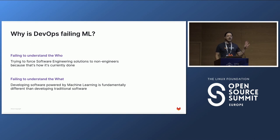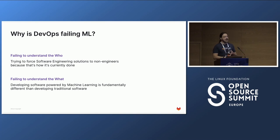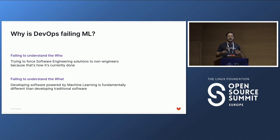There were two themes across these examples of where DevOps or platform teams are failing the machine learning world. First, failing to understand the who — the people involved with developing machine learning are different from software engineers, with different backgrounds and different ideas. Second, failing to understand the what — even though the goal is the same (building better software), developing software that includes machine learning is fundamentally different from developing regular software.